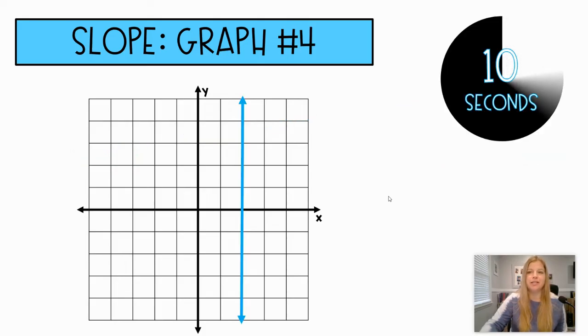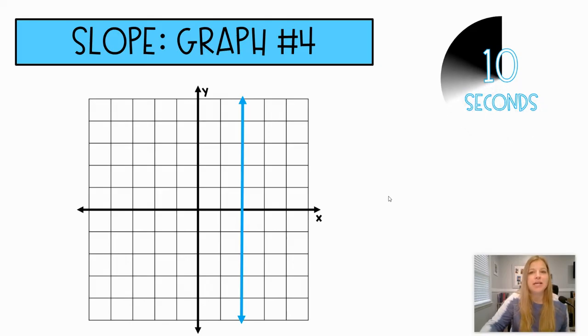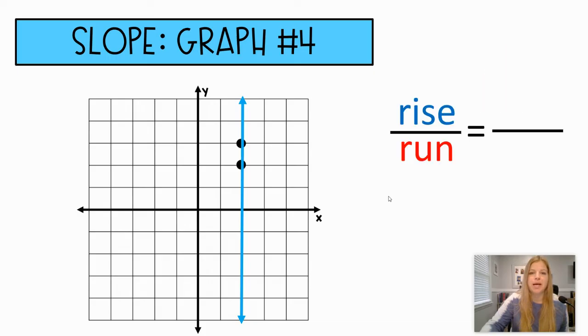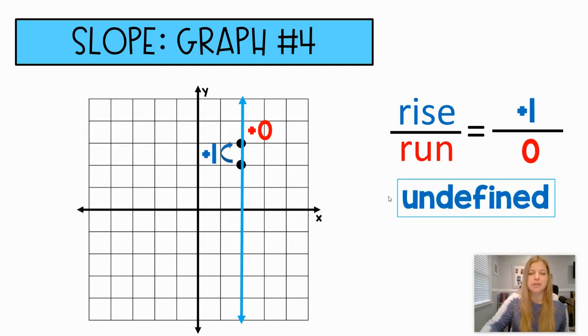Ooh, this one's a trickier one. It's one of those special cases for slope. Definitely a special case situation. Okay, so this one, we rise one, we don't run anywhere. So it ends up being one over zero, and we know we cannot divide by zero. So that is undefined. There is no numerical value for a vertical line.